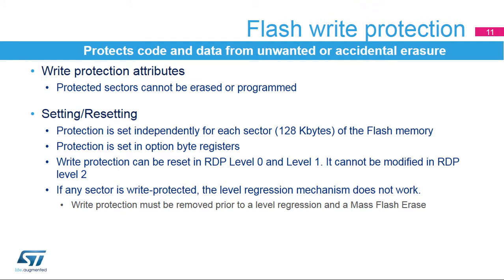The write protection protects code and non-volatile data from unwanted or accidental erasure. This protection is only available on the flash memory. The write protection can be set on a selection of flash memory sectors only. There are 8 sectors of 128 kilobytes per bank defined in STM32H7 microcontrollers. When a sector is protected, it cannot be erased or programmed. Any attempt to write access the sector will cause a flash memory error. If at least one sector is write protected, a mass erase of the flash memory cannot be performed — the protection needs to be removed first.